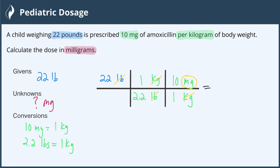So let's go ahead and multiply across. 22 times 1 times 10 is 220. Then in the denominator, 2.2 times 1 is 2.2.